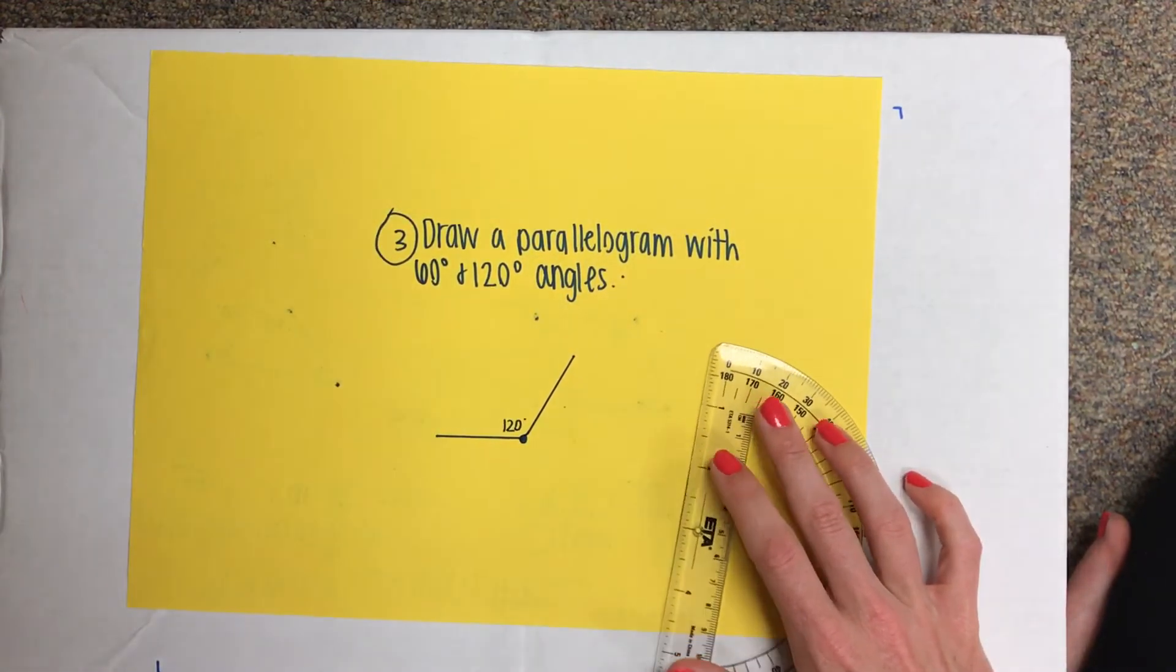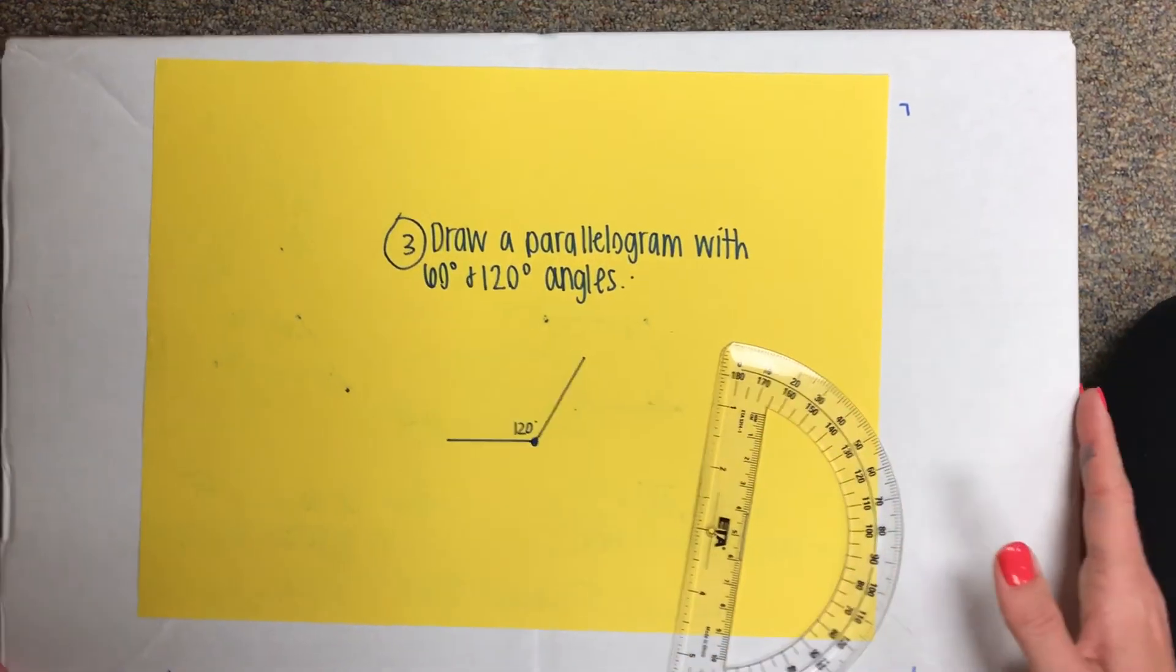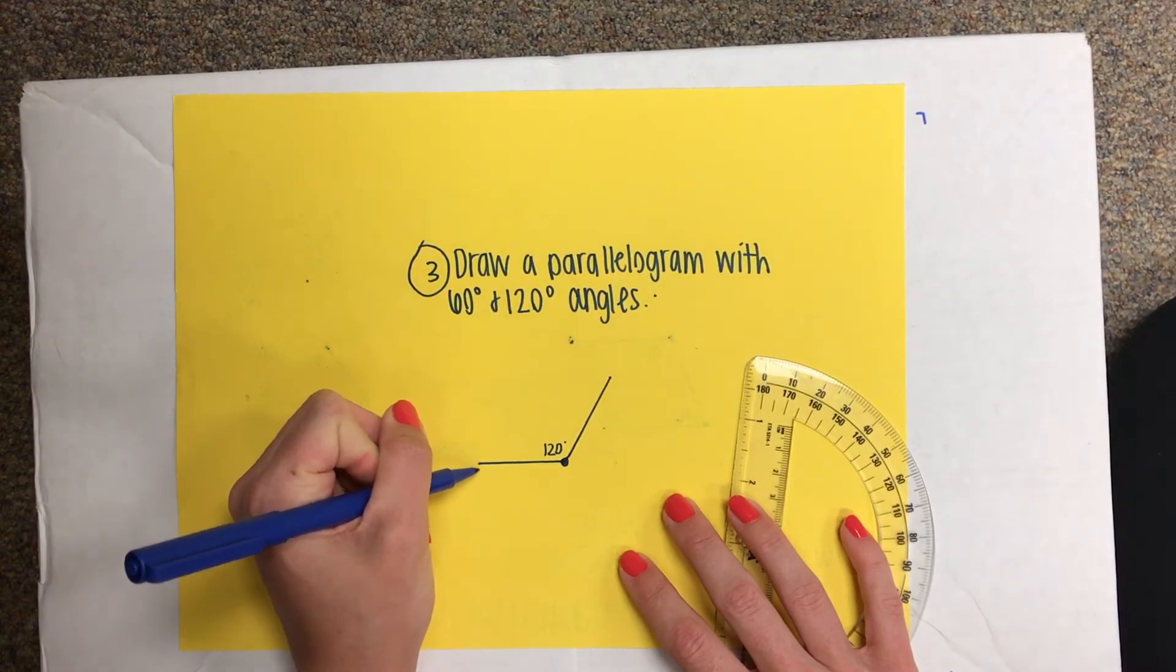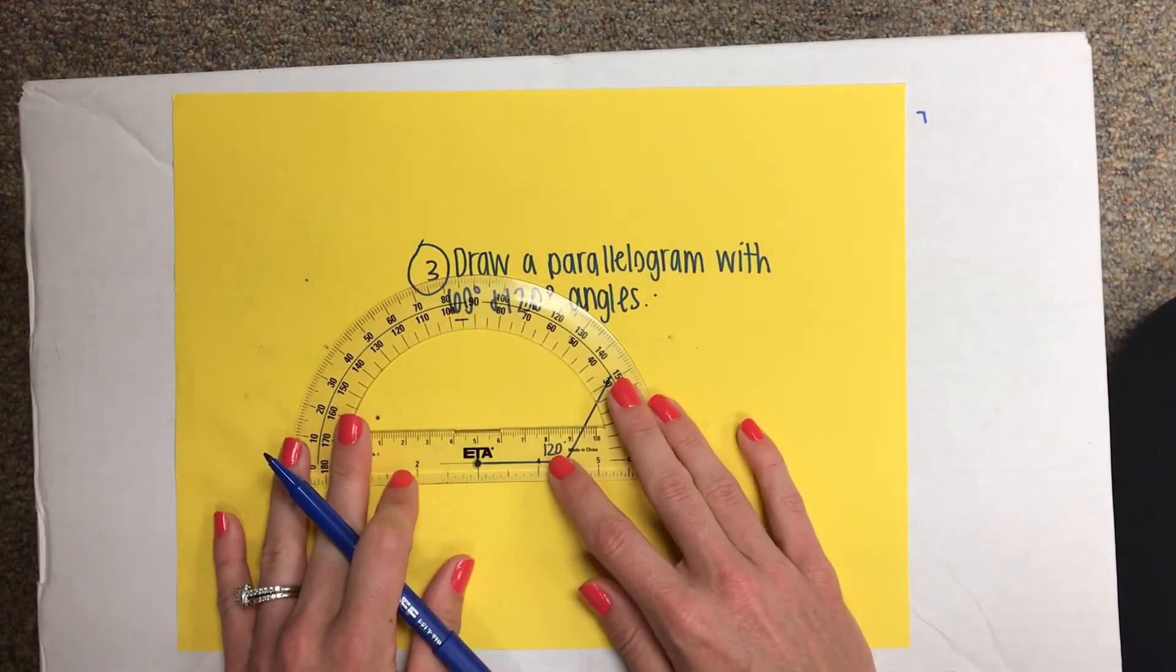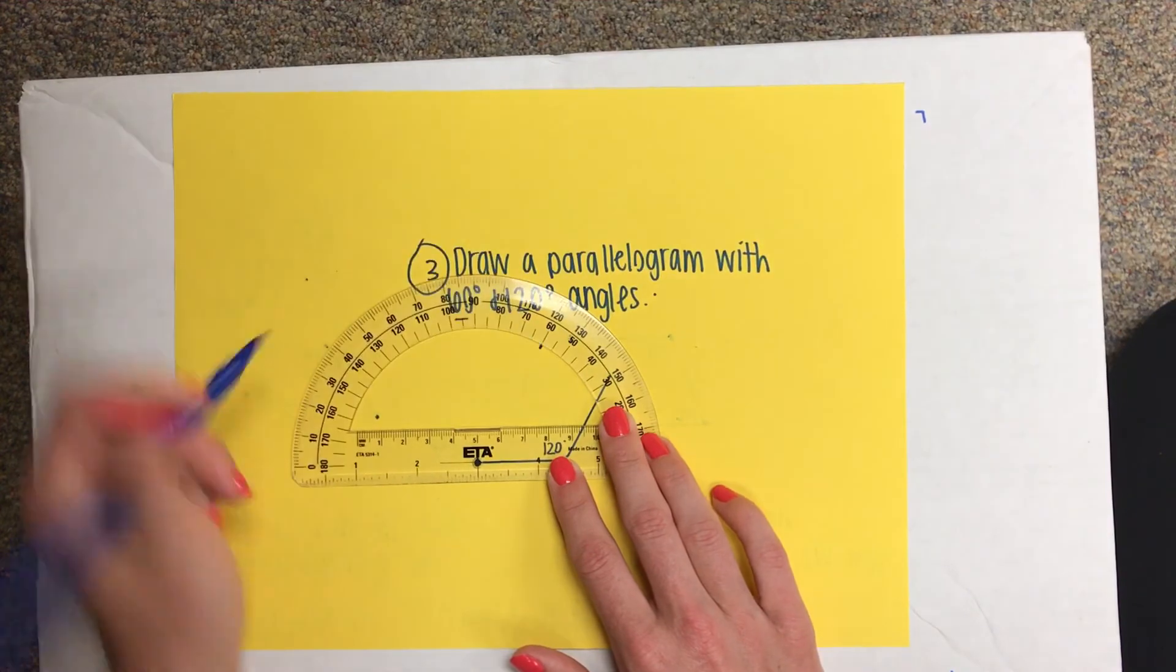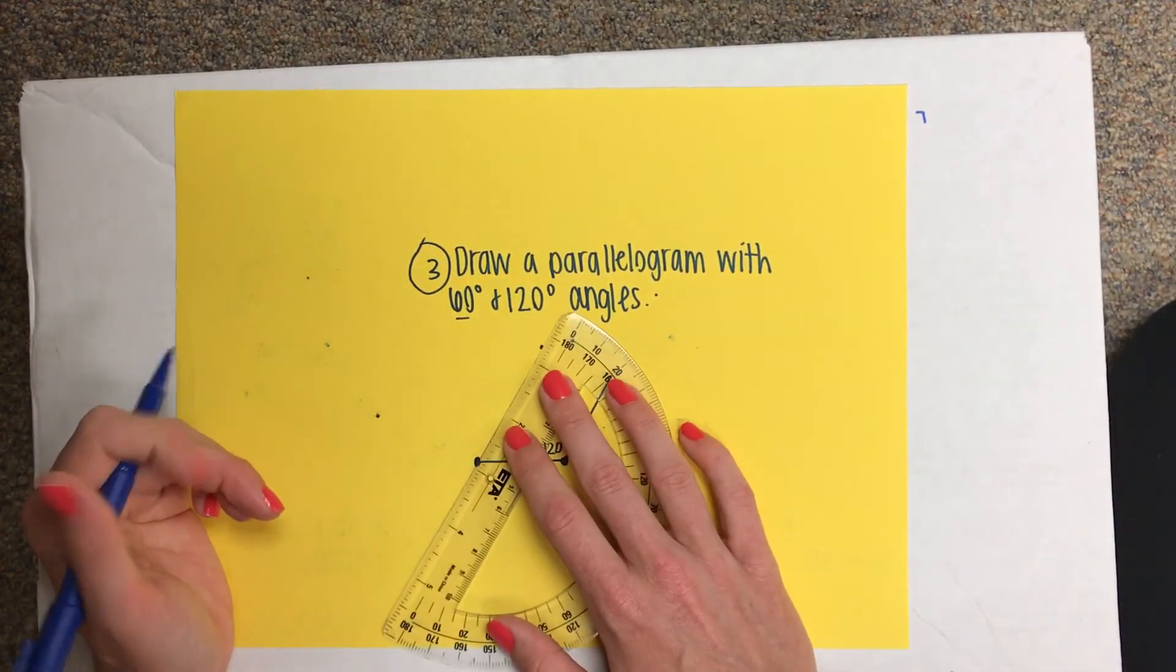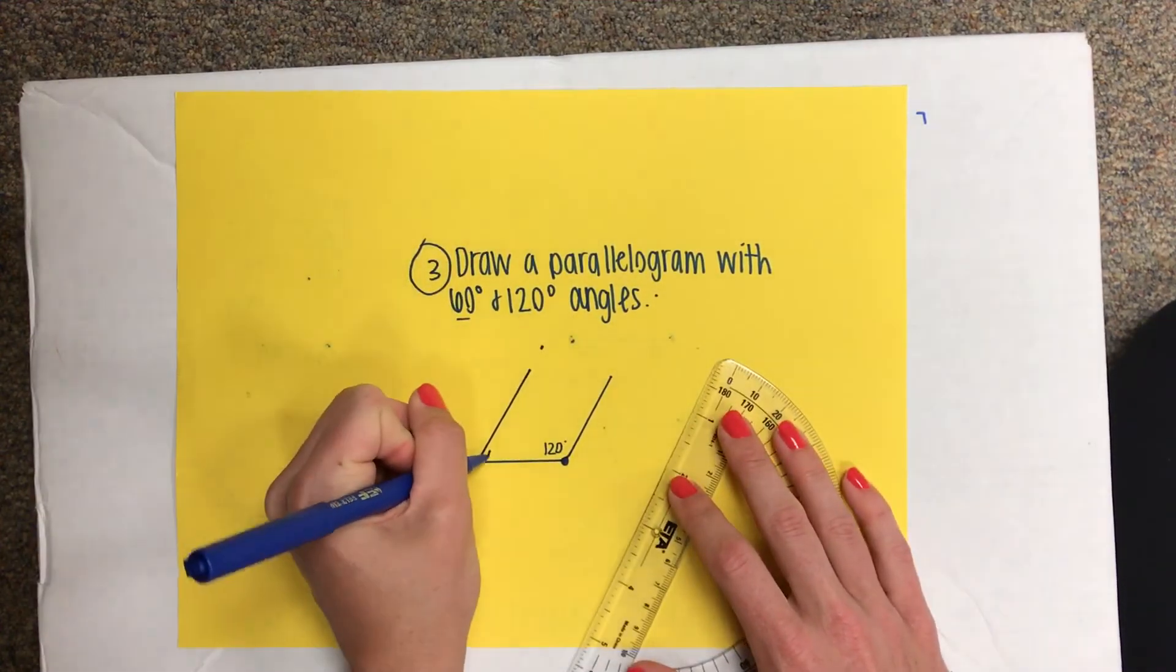And remember, 60 degrees is going to have to go right next to 120. So I'm going to make my new dot right next to it, and then do my 60 degree angle. 0, 10, 20, 30, 40, 50, 60, right here. Connect tick mark to dot, and that'll be 60.